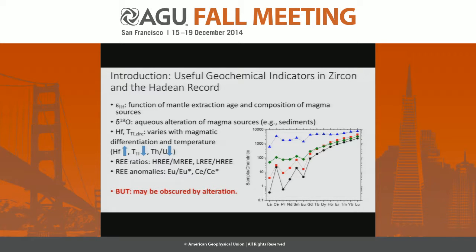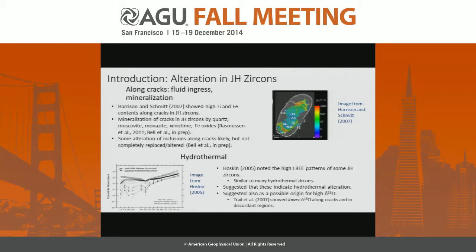There are various other patterns visible in zircons that have been altered by various mechanisms — a high, more flat light rare-earth pattern, and indeed a flat rare-earth pattern overall. Many of these signals can be obscured by alteration. Various types of alteration have been either identified or proposed for the Jack Hills zircons in past studies.